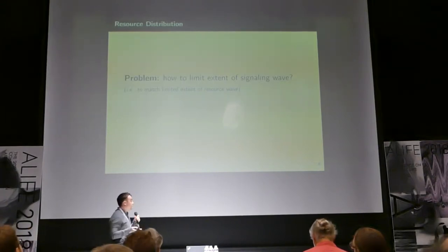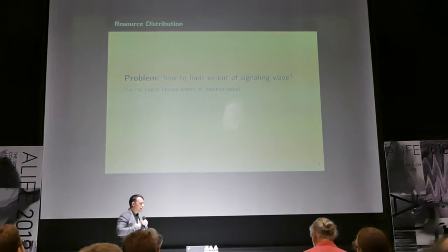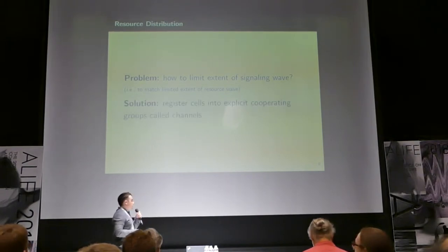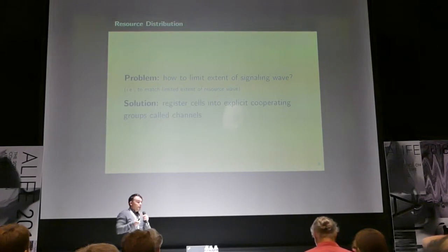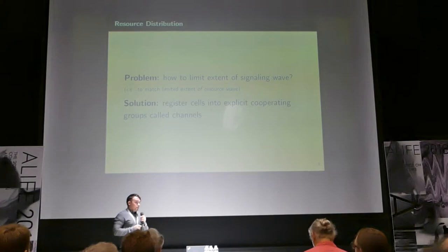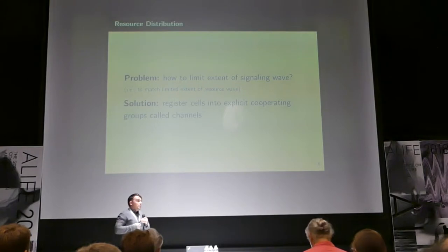How are we going to limit the extent of this activation quiescent signaling wave? And what we do is we register the individual cells into explicit cooperating groups where they're going to communicate with just the cells that are registered to their own individual channel. The extent of the signaling will be limited by the extent of this same channel network.